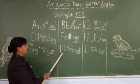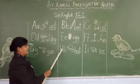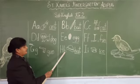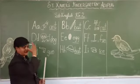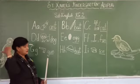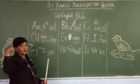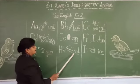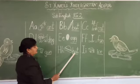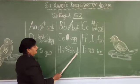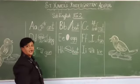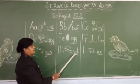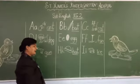After G comes H. Capital H, small h. H is for hat. This is a hat. Spell hat: H, A, T. Hat. Come on, say it: H, A, T. Hat.